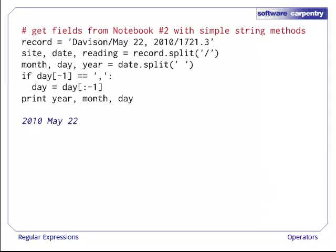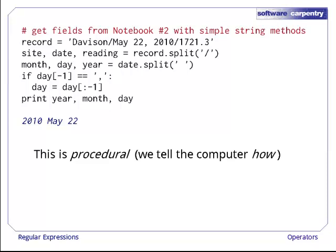Before we look at how to use regular expressions to extract data from notebook number two, let's see how we would do it with simple strings. If our record is the string shown in the first line of code, we could split on slashes to get the site, the date, and the reading. Then split the middle field on spaces to get month, day, and year. And then remove the comma from the day if it is present. This is a procedural way to solve the problem. We are telling the computer how to do something.